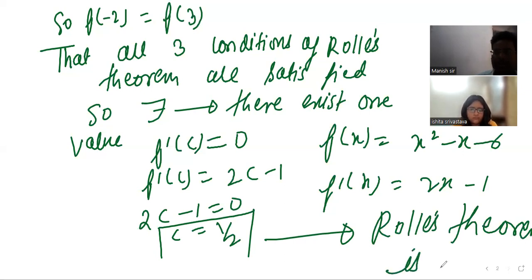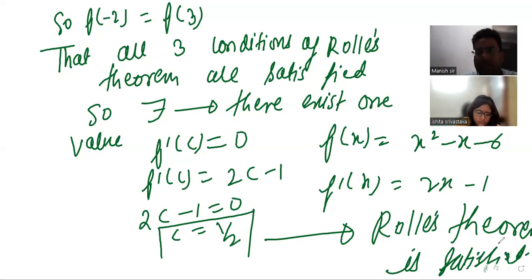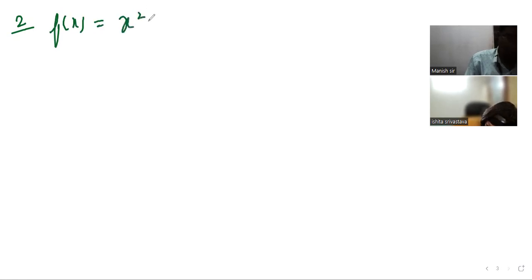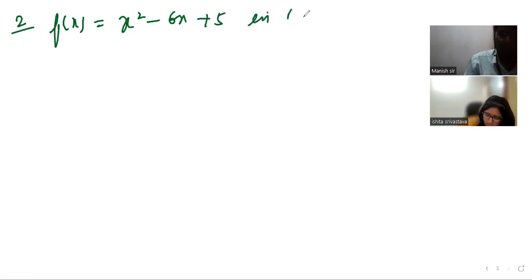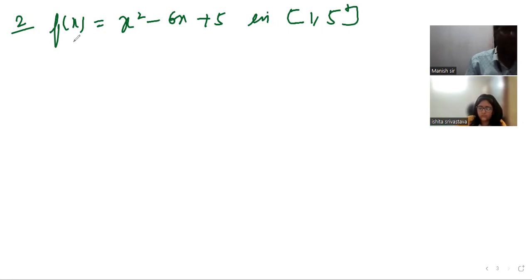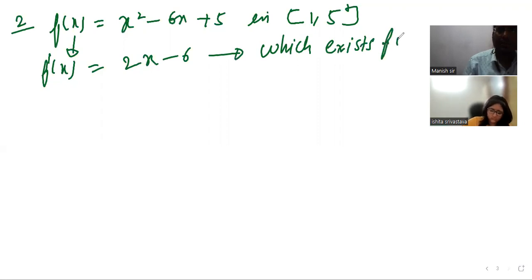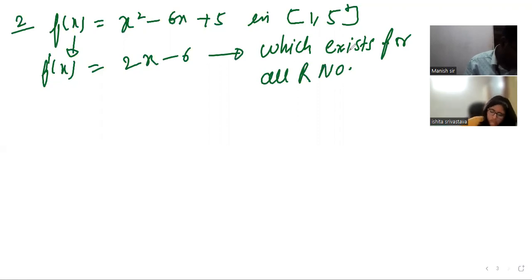In a similar manner, consider question number 2: f(x) = x² - 6x + 5 on the closed interval [1, 5]. Differentiating directly, f'(x) = 2x - 6, which exists for all real numbers, so the function is differentiable on the given interval.